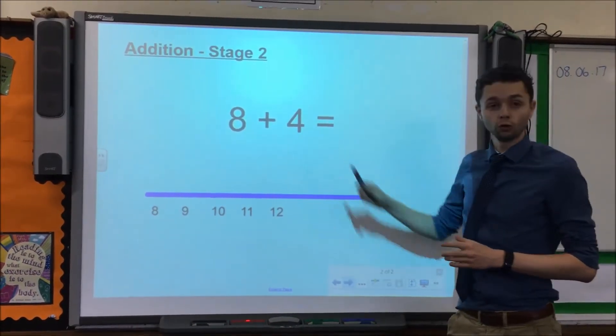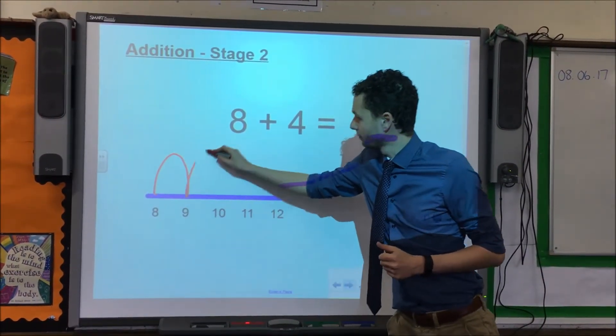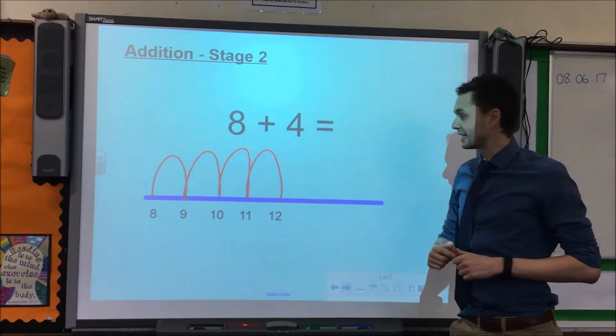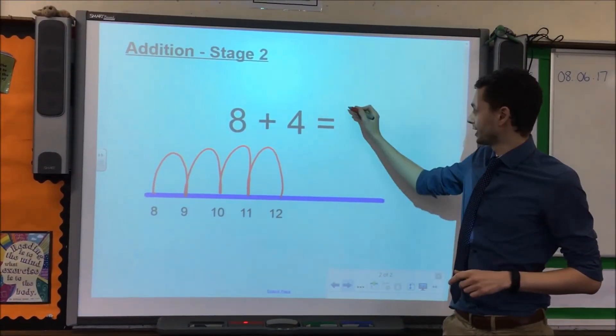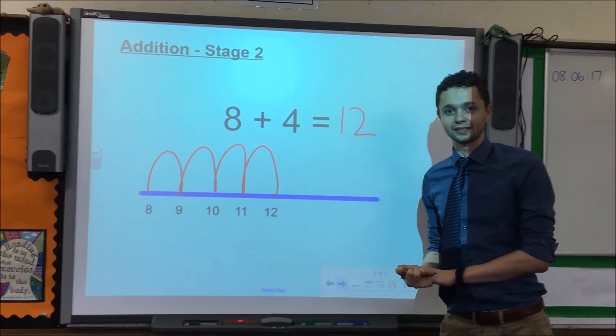We then need to take 4 jumps because we are adding 4. So we start at 8 and we go 1, 2, 3, 4. There we can see the answer to 8 add 4 equals 12. That is addition stage 2 and I hope it made sense.